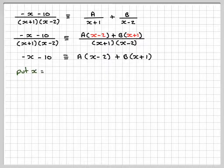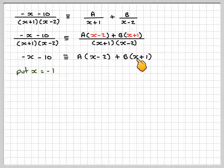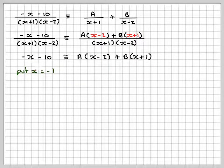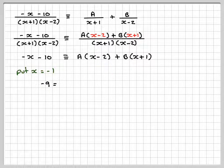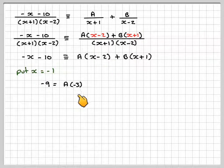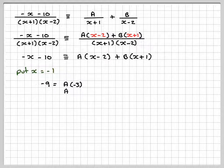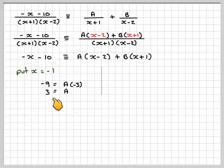Let x equal minus 1, which makes the B bracket zero. Substituting minus 1: minus minus 1 gives 1, minus 10 gives minus 9 on the left. On the right, minus 1 minus 2 gives minus 3, so A times minus 3 equals minus 9, therefore A equals minus 9 divided by minus 3, which is 3.